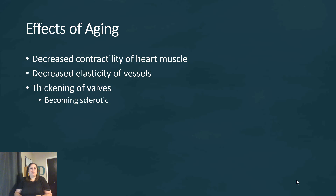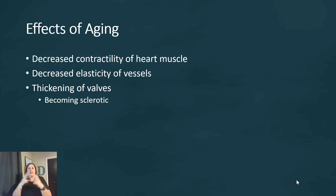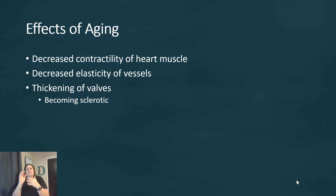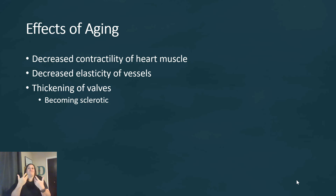With aging, the cardiovascular system undergoes several changes: decreased contractility of the heart muscle, loss of elasticity in blood vessels causing them to harden, and thickening of the heart valves leading to stenosis that impairs blood flow between chambers. These changes occur in everyone with age, though lifestyle and diet can influence when they appear.